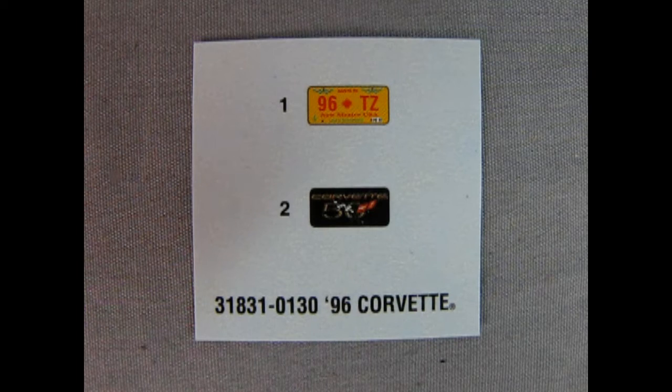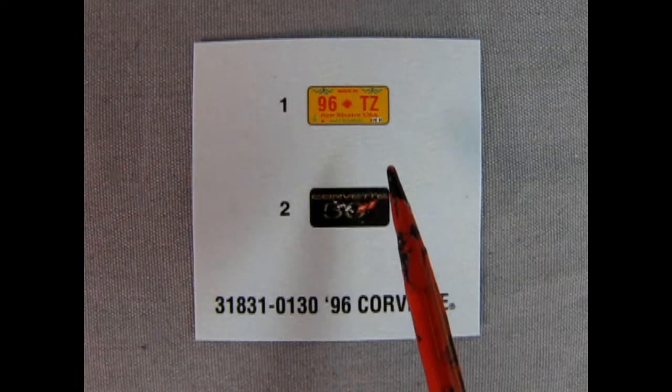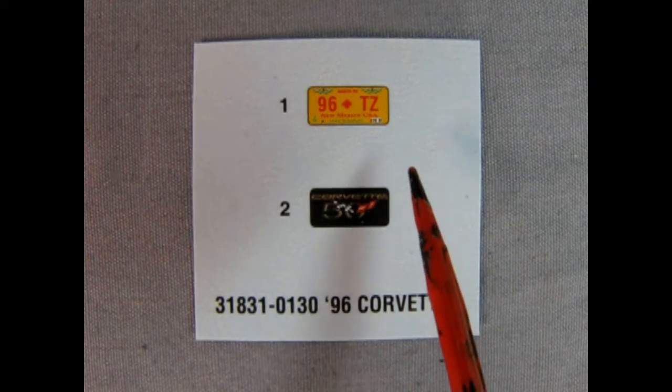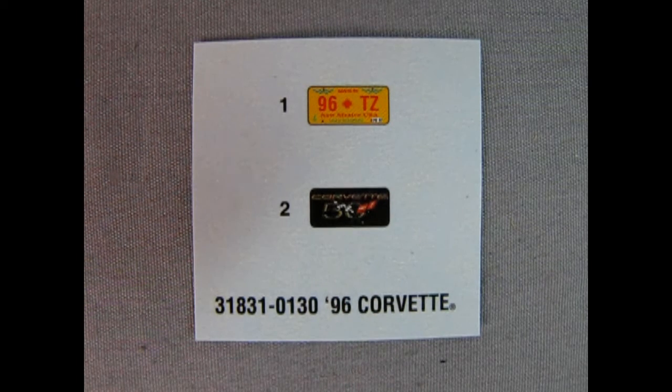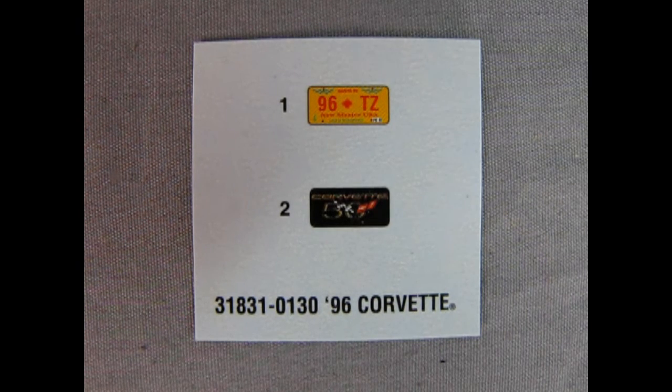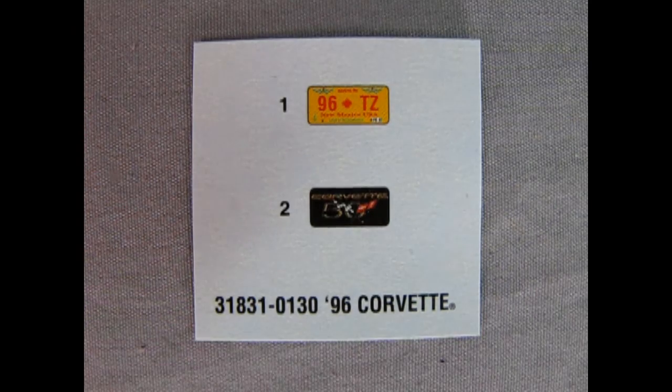Here we have our license plate decals. These are the only decals in the kit. So you get these wonderful New Mexico '96 TZ decals and you also get a 50th anniversary Corvette license plate decal. Hey Trevor, how come in this video we're being all silly? Well Danny, that's easy. It's because we've seen so many of these Corvette C4 videos and they're almost all the same model in the box. So I thought we'd just goof it up a little bit on our last video of the C4 Corvettes. Well, that sounds like a good idea.